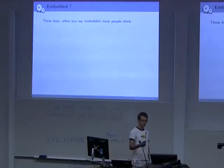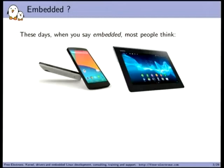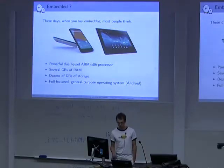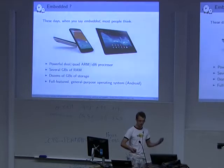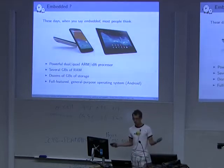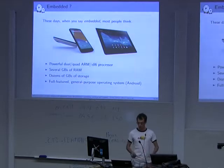These days when people say 'embedded' they usually think of phones, tablets, and consumer-grade devices. Those devices typically have very powerful CPUs, lots of RAM, lots of storage, and a full-featured general-purpose operating system — usually Android — with many applications you can install, remove, and upgrade. It's really a complete desktop operating system.